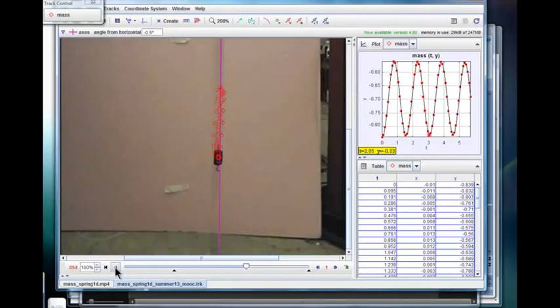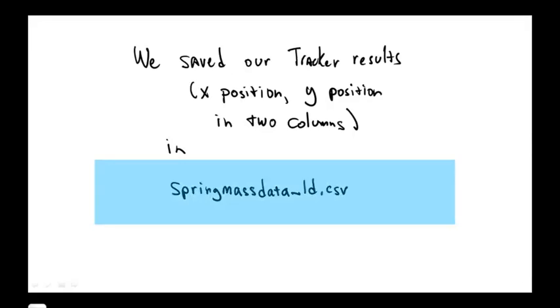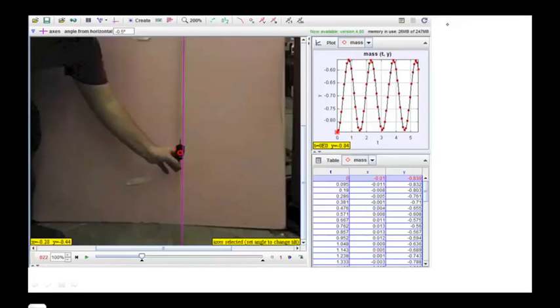And so we get something like this. At this point we are going to cut the position data both the measured x and y positions and paste this into a spreadsheet. We'll save this data later in CSV format to a file named spring mass data underscore 1d dot CSV. Later we'll compare our data with the motion predictions from the computer model we're going to build shortly. Before we get to that we will need information from the spring mass experiment and observations in order to set up our model.